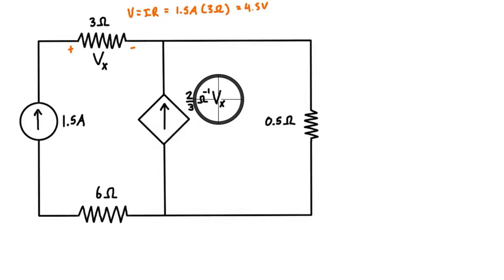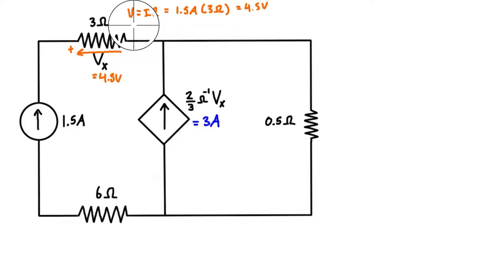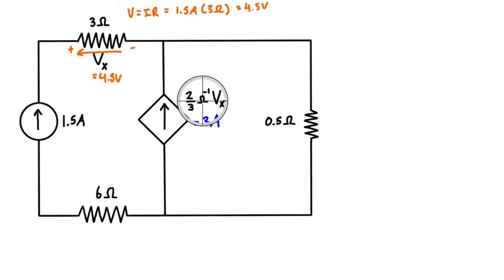Now that we have Vx, all we need to do is substitute it in. Vx = 4.5 volts, so 4.5 × (2/3) gives us a current of simply 3 amps. The units check out because rearranging Ohm's Law for current gives us voltage divided by resistance — volts divided by ohms gives amps. So when you see something like this, it's actually not that bad, and from here we can pretty much rip through the rest of the problem.